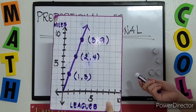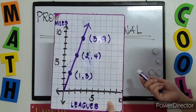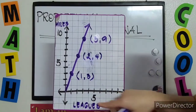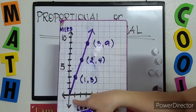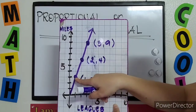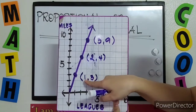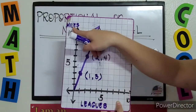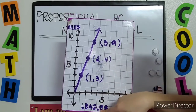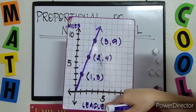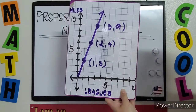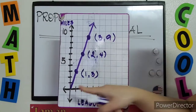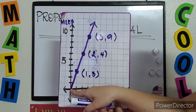Now, if it is proportional, what is the unit rate? The unit rate is the ordered pair wherein x is 1. Look at your x-axis — this is 1. Go up and check the point. The given ordered pair is (1, 3). Therefore, our unit rate is 3 miles per league. So for 3 miles, that is per league or over 1 league. This graph is proportional because it is a straight line and it passes through the origin.